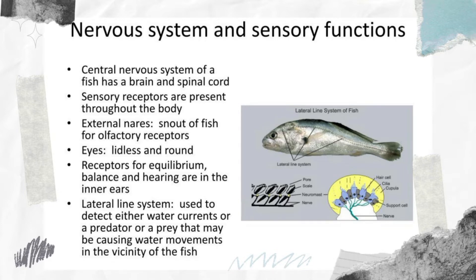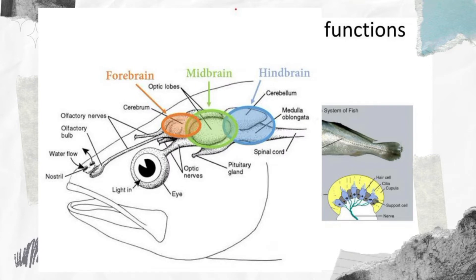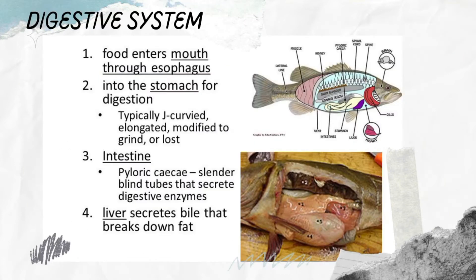In terms of the nervous system and their sensory function, the nervous system of fishes is poorly developed compared to that of other vertebrates. But a bony fish's brain is divided into three sections: the forebrain, the midbrain, and the hindbrain. The forebrain is responsible for the bony fish's ability to smell — fishes with an especially good sense of smell, such as eels, have an enlarged forebrain. The midbrain processes vision, learning, and motor responses.